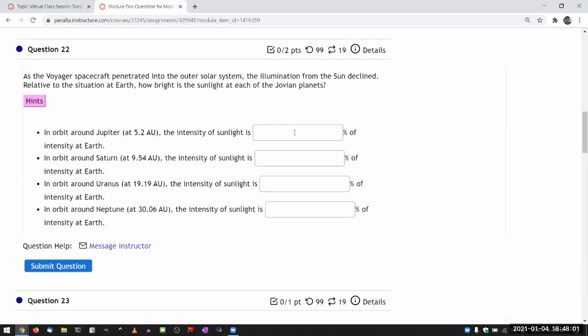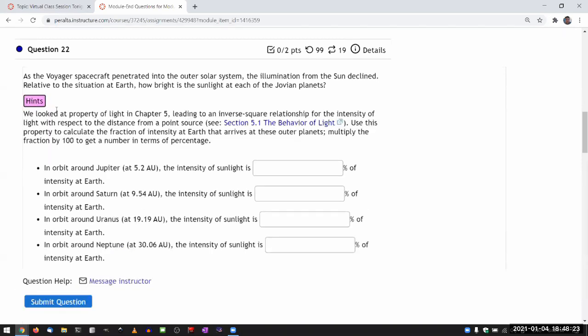I guess this is a module 2 question that is masquerading as a module 3 question. So to answer this question, what you really need is the inverse square law of not the gravitational attraction, but of the light intensity. And I'm pretty sure that's what I tell you in the hints. We looked at the property of light in chapter 5, relating to inverse square relationship, and we covered that in module 2.